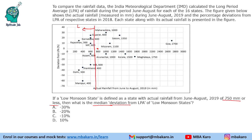First, let us find how many low monsoon states there are. Counting them: 1, 2, 3, 4, 5, 6, 7, 8, 9. So there are 9 low monsoon states. For 9 values, the 5th value is the median. Whether you count from the top or the bottom, the 5th value will be the same. Counting from the top: 1st, 2nd, 3rd, 4th, and 5th — Assam is the 5th one with a deviation of minus 10%. Counting from the bottom also, Assam is the 5th. So the median deviation is minus 10%.